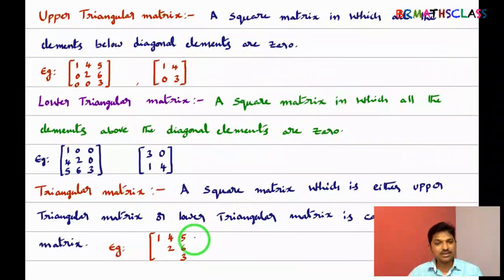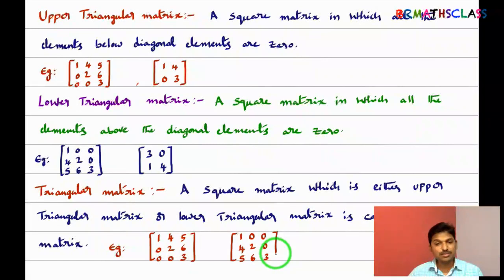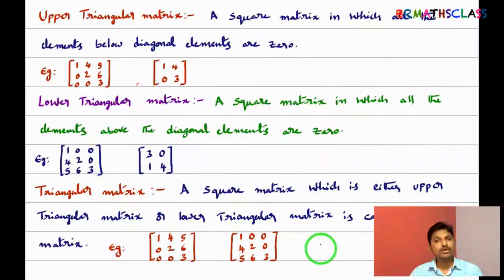Now we will see what is a triangular matrix. A square matrix which is either upper triangular matrix or lower triangular matrix is called a triangular matrix. It may be upper triangular or lower triangular — if it is either one, then we say it is a triangular matrix. See these examples: this matrix is upper triangular matrix — all the elements below the diagonal are zero — and we can also call it a triangular matrix. And this one, all the elements above the principal diagonal are zero, so it is actually a lower triangular matrix, which is also known as a triangular matrix.